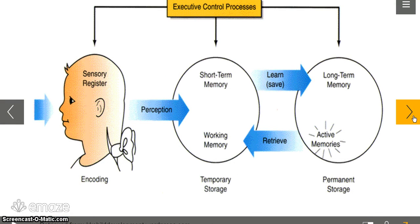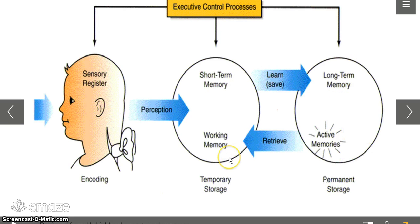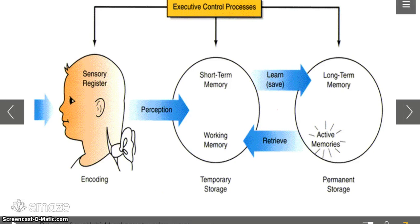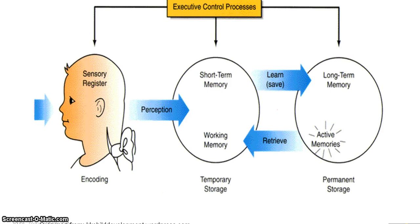I found this diagram and found it very interesting. You have the sensory register, it goes into the short-term memory, then in turn the long-term memory retrieves back to short-term memory. I found this diagram really helpful for me and I'm hoping that you'll find it helpful too, to kind of explain with a visual cue about the information processing theory.